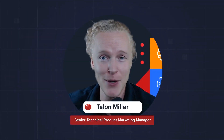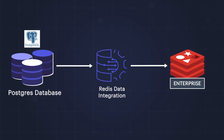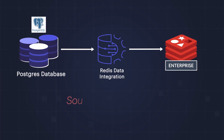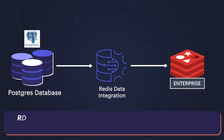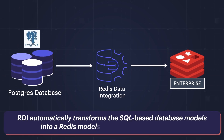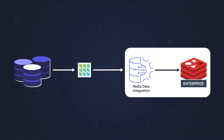In our lightning demo today, we're going to be taking a table from a Postgres database into Redis Enterprise. Under the hood, it's pretty amazing that RDI automatically transforms the SQL-based database models into Redis models and types in near real-time. The process kicks off with Debezium, an open-source change data capture tool, which reads an initial snapshot and then continues to read the change log of the source database, making sure it sends live updates.